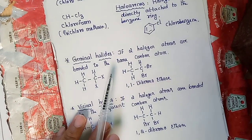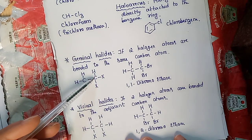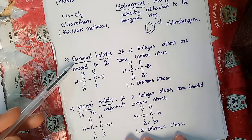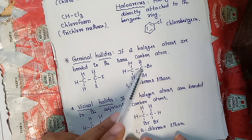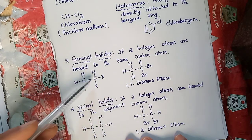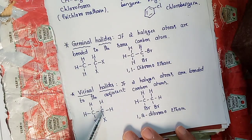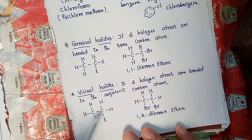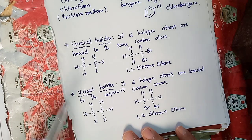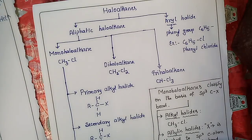If two halogen atoms are bonded to the same carbon atom, such a halide is called a geminal halide. Example: 1,1-dibromoethane. If two halogen atoms are bonded to adjacent carbon atoms, that is called a vicinal halide. Example: 1,2-dibromoethane.